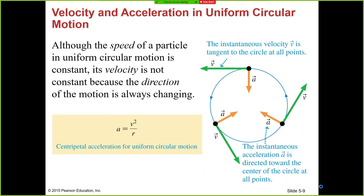However, when an object moves in a circular track or circular path, what changes is the direction of the motion. In this picture, you see this object — this black dot — moving in the counterclockwise direction. While moving in that direction, the magnitude of the velocity at each and every point on this path remains constant. The length of this green arrow is the same everywhere, but the direction is changing all the time.